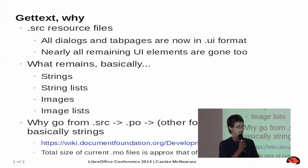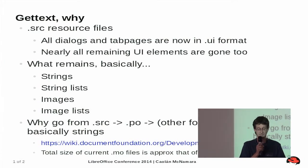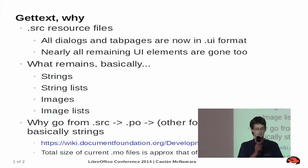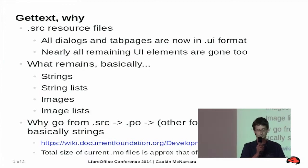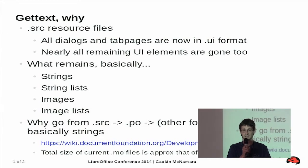What remains is basically strings, string lists, images, and image lists. So the question is: should we continue to go from the .src file to the .po file format, back into a whole bunch of other file formats, and then back into the final binary .res file format, if all we're doing is basically transporting strings around to be translated?